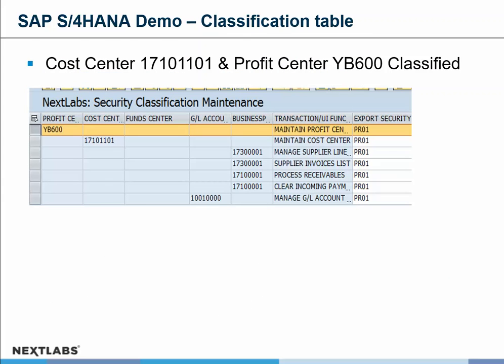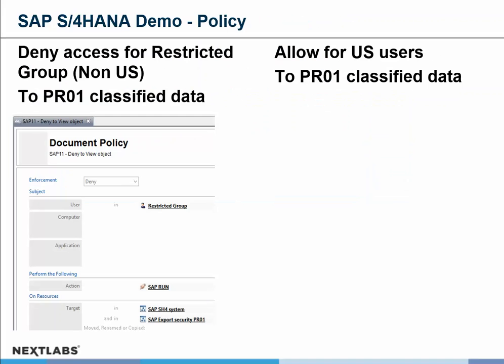The reason for that is within the classification table that's set up. Both the cost center and the profit center mentioned previously are set up as classified — profit center YB600 and cost center 17101101 are listed within that classification table. The policy used for enforcement is a simple deny policy based on certain restrictions for users performing an SAP run within the S4 HANA system. It only allows U.S. users to access the PR01 classified data. That's why Adam can see all the information, and Jane is filtered from certain ones she cannot see.